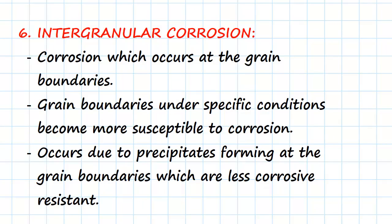The first we're going to consider is intergranular corrosion. This is a corrosion which occurs at the grain boundaries. The grain boundaries under specific conditions can become more susceptible to corrosion. Depending on the heat and the material, this particularly happens with stainless steels. At a microscopic level, the grain boundaries tend to form precipitates which can become more corrosive than the rest of the actual grain. This occurs due to precipitates forming at the grain boundaries which are less corrosion resistant. Remember, this is at a microscopic level so we can't really see it with the bare eye — this is a microscopic level of corrosion.